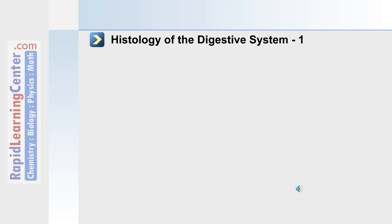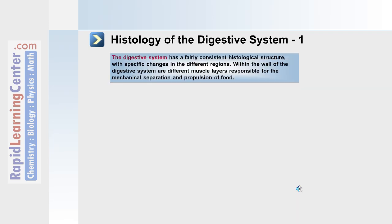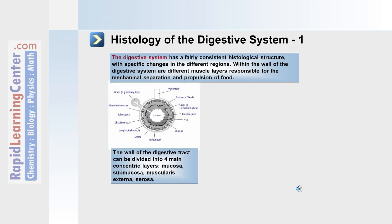The histology of the digestive system. Throughout the length of the digestive tract, the histology is very similar, though it changes in some key regions. Muscular layers within the wall of the intestines and digestive tract facilitate mixing movements and propulsion of food. Shown here in the diagram is a cross-section of the intestinal wall, with the lumen in the center. The muscularis mucosa and submucosa are surrounded by circular and longitudinal muscle layers. The wall can be divided into four main concentric layers.